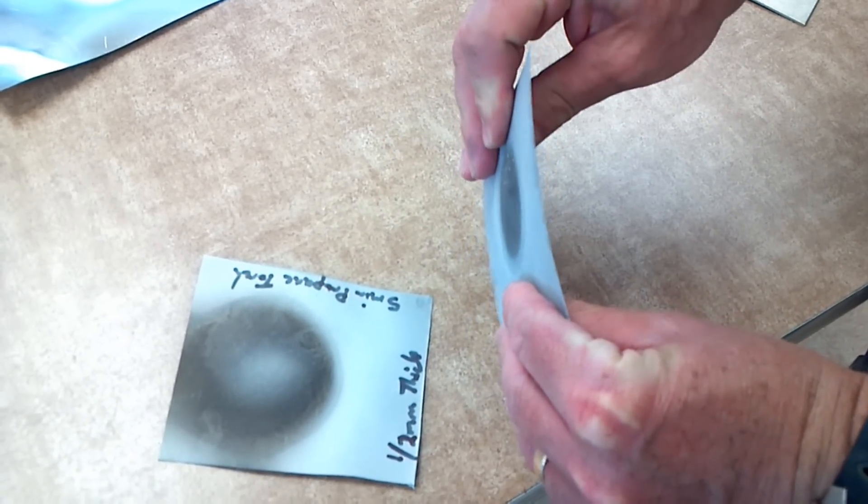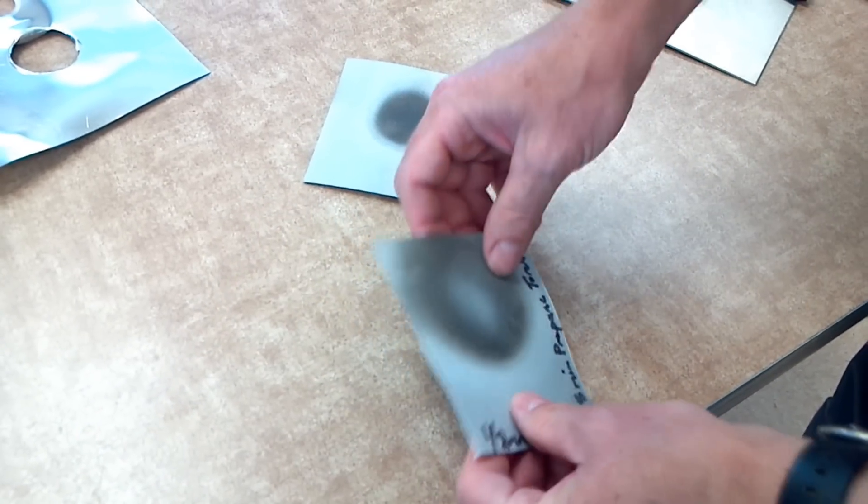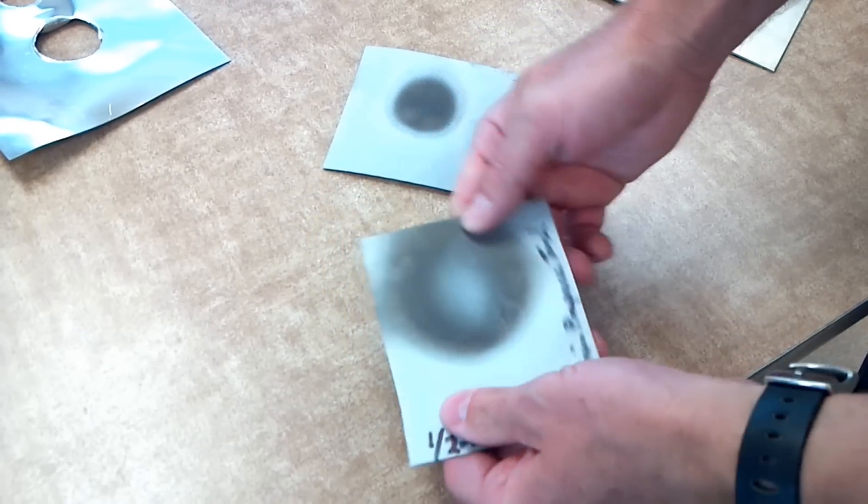But it does show that we can use different kinds of ceramic fiber and get very heat resistant properties. And again with this material I can readily bend it almost like a piece of aluminum foil.